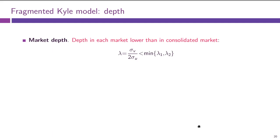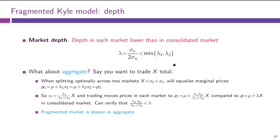Let us talk about market depth and the effect of fragmentation on it. The book says depth in each market is lower than in the consolidated market, which may be slightly trivial — if you split orders perfectly between two markets, even if aggregate depth stays the same, depth in any given market will be lower. What is more appropriate is looking at aggregate depth, which the book does not do. Let us do it nonetheless and see what happens.